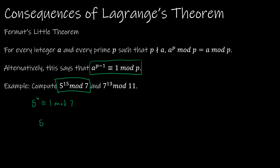So 5 to the 15th equals 5 to the 6th times 5 to the 6th times 5 squared times 5 to the 1st. Since 5 to the 6th ≡ 1 mod 7, and 5 squared = 25 ≡ 4 mod 7, we get 1 × 1 × 4 × 5 = 20. And 20 mod 7 is 6 mod 7.